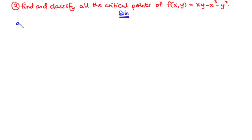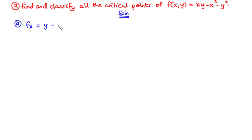First, we find fx. We differentiate x with respect to x and get 1, so 1 times y gives us y. Then we differentiate x cubed with respect to x and get 3x squared. Differentiating negative y squared gives zero. So we have fx equals y minus 3x squared.